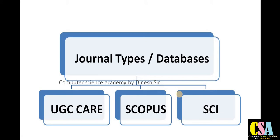These are the three categories of journal database types. First one is the UGC care, second one is Scopus, and third one is Web of Science or SCI index journal. When we publish, we only focus and target these because they are renowned and authentic journal databases.